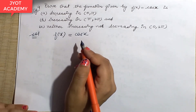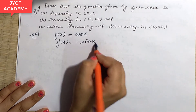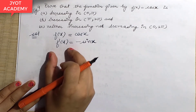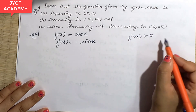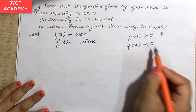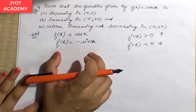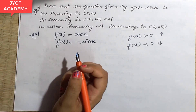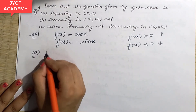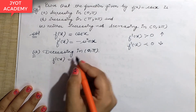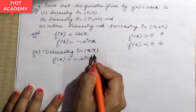Here you differentiate the function and get the value of f'(x) as minus sin x. Because we need to see the values to determine whether your function is increasing or decreasing: if f'(x) > 0, it's increasing; if f'(x) < 0, it's decreasing. The intervals are already given here, so we won't go outside of them. For part (a), f'(x) = minus sin x, and the interval to check is 0 to π.